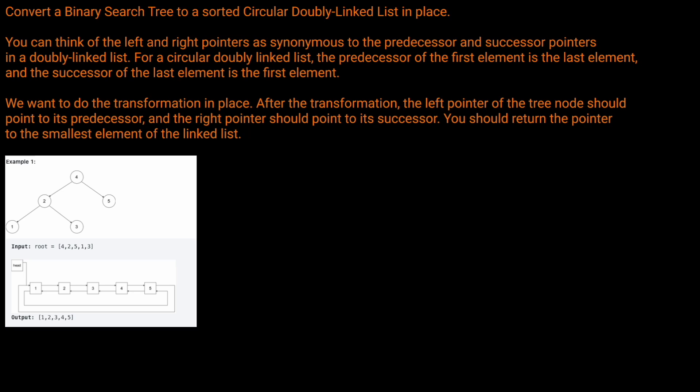So let's read the question prompt. Convert a binary search tree to a sorted circular doubly linked list in place. You can think of the left and right pointers as synonymous to the predecessor and successor pointers in a doubly linked list. For a circular doubly linked list, the predecessor of the first element is the last element, and the successor of the last element is the first element. We want to do the transformation in place. After the transformation, the left pointer of the tree should point to the predecessor, and the right pointer should point to its successor. You should return the pointer to the smallest element in the linked list.